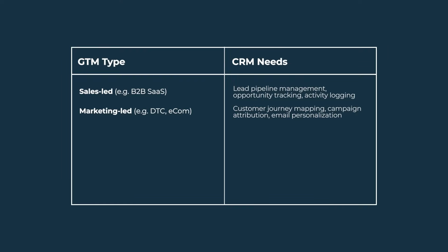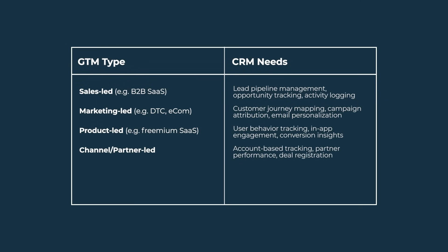For example, if you're a sales-led or marketing-led organization, you'll likely prioritize things like pipeline management, opportunity tracking, and campaign attribution. But if you're a product-led company, you might prioritize user behavior tracking, in-app engagement, and conversion insights. Or if you're partner-led, you might prioritize partner performance and deal recognition.